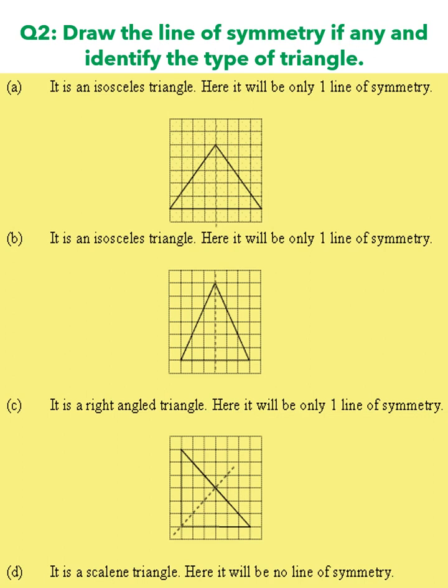In question number two, you have to draw the line of symmetry, if any, and identify the type of triangle. When it says 'if any,' there is a chance that some triangle will not have any line of symmetry. The first was an isosceles triangle and it will have one line of symmetry. The second one is also an isosceles triangle and will also have one line of symmetry. The third is a right angle triangle and will have one line of symmetry which is drawn here. And the last one is a scalene triangle and it has no line of symmetry.